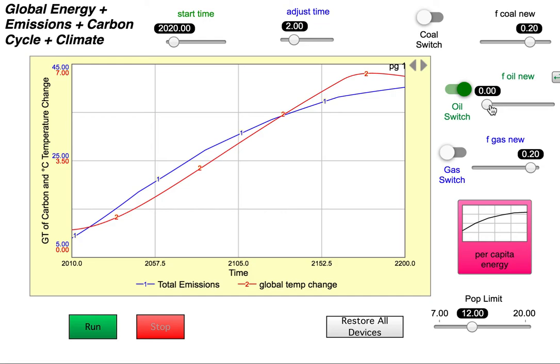And remember the renewable fraction will rise as a result of that. We have to make sure the start time is at 2020, the adjust time is at two. We don't change the per capita energy or the population.